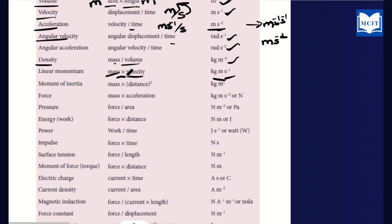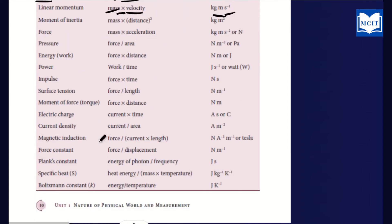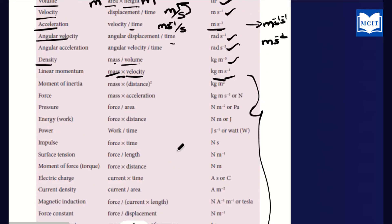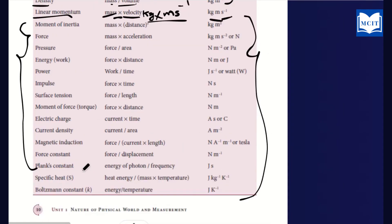Linear momentum is mass times velocity — kg times m·s⁻¹, giving kg·m·s⁻¹. All formulas work this way. If you just memorize the formulas, you can derive the units. Write your calculations with units and write your answers with units easily.